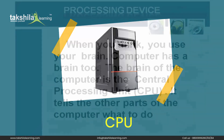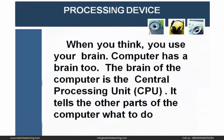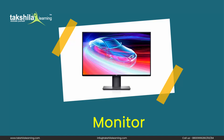When you think, you use your brain — a computer has a brain too. The brain of the computer is the Central Processing Unit, or CPU. It tells the other parts of the computer what to do. The processing device of the computer is known as CPU. All the processing and order-giving to other parts of the computer is done by the CPU. It acts as the brain of the computer.